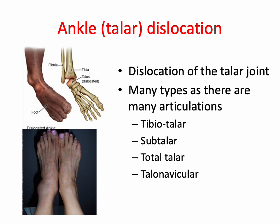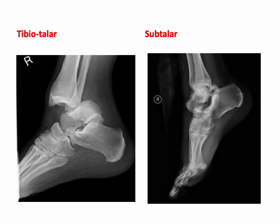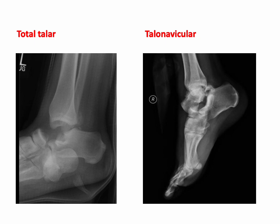There are many dislocations of the ankle joint given its many articulations. A tibiotalar dislocation involves posterior dislocation of the talar dome from the tibia. A subtalar dislocation involves dislocation of the subtalar joint, often with an associated fracture. A total talar dislocation involves disruption of the tibiotalar, talonavicular, and subtalar joints. A talonavicular dislocation involves disruption of the talonavicular joint.